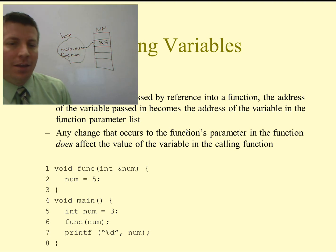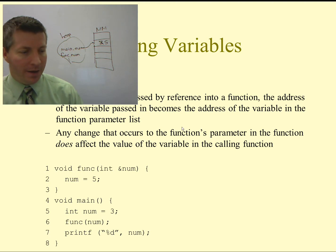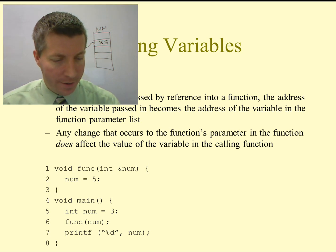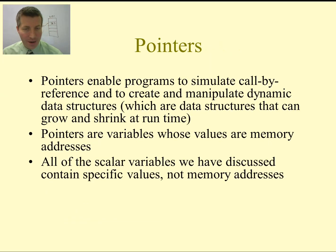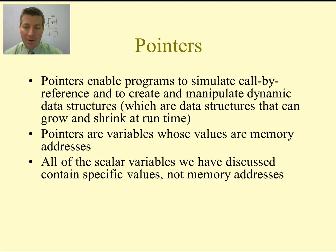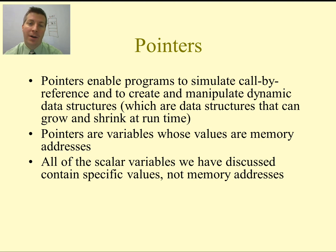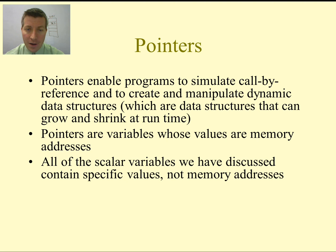But you see now on line 7, when I print out the value of the num variable in the main function, it prints out a value of 5, because inside of the func function, it was pointing at the same location of memory. That is how a pass by reference works. Now, pointers are just variables whose values are memory addresses. This is going to be very, very critical — something you should always remember: the value of a pointer is an address. If you can remember that, it's really going to help you understand what's going on with pointers.